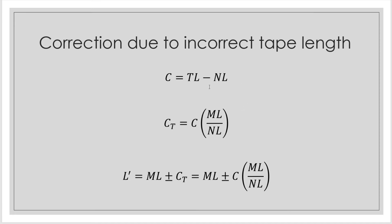To account for the correction due to incorrect tape length, we shall use these formulas. First, C is equal to TL minus NL. This is the correction for every tape length. TL is the true length of the tape and NL is the nominal length of the tape — the nominal length is what the manufacturer states. So the correction is just the difference between the true length and the nominal length.